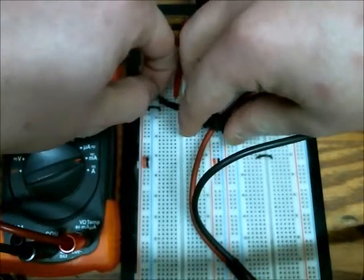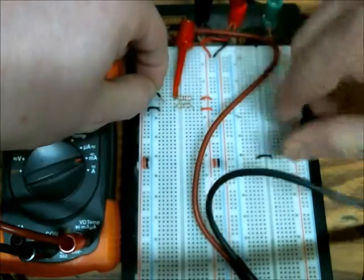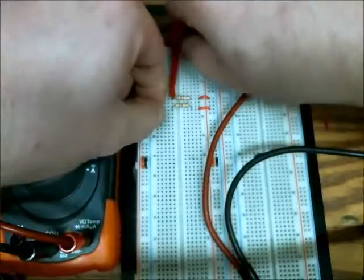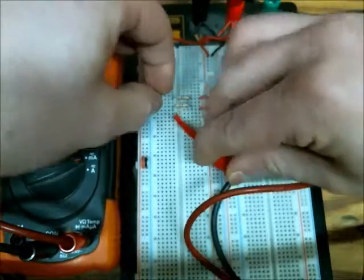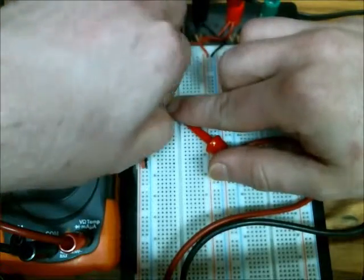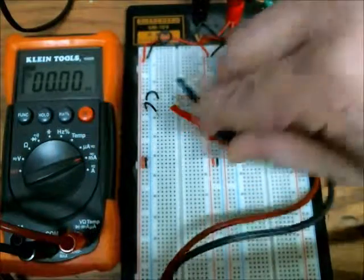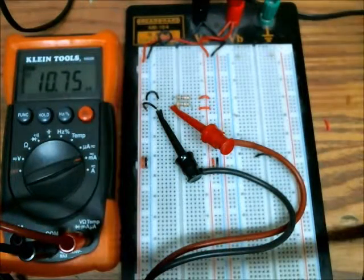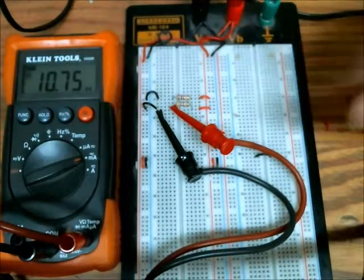Now I'm going to measure the current through R2, which should be roughly 10.6 milliamps. Yep, really close to 10.6. So there you go.